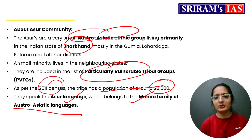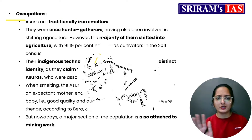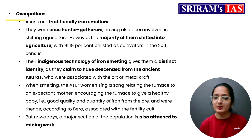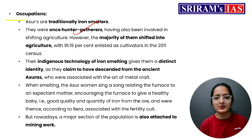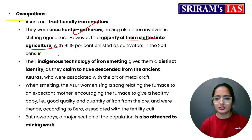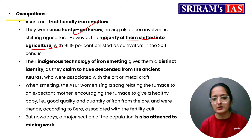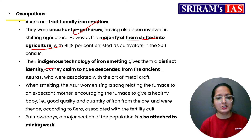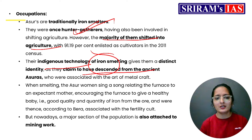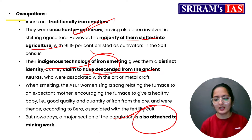In terms of occupation, the Asur community has a rich history as iron smelters, known for making iron from ore. They were once hunter-gatherers who lived by hunting animals and gathering plants. The majority have now shifted to agriculture — in the 2011 census, 91% worked in farming. In today's time, many Asur people are also working in mining. Their indigenous technology of iron smelting gives them their identity, and they claim to have descended from the ancient Asuras.